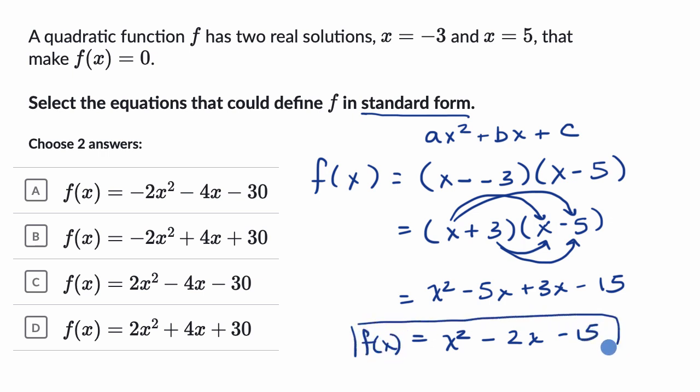Now let's see which of these choices gets me this. So when I look over here, what's interesting is all of these have a coefficient of either two or negative two. I don't see that over here. So what is happening here is I can multiply this whole thing by a two or a negative two, and it's not going to change where my zeros are.